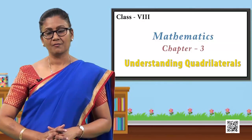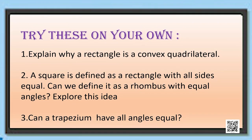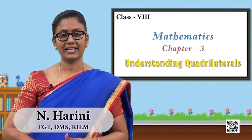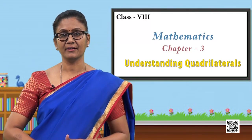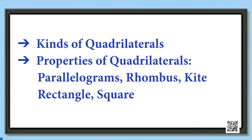So students, we have discussed the properties of all the varieties of quadrilaterals today. Before we close, let us recall the concepts: we have learnt about the various kinds of quadrilaterals and their properties, including the parallelogram, the rhombus, the rectangle, and the square.